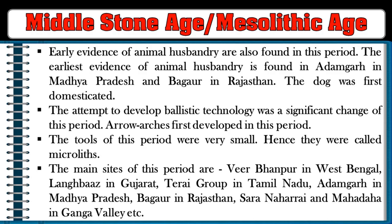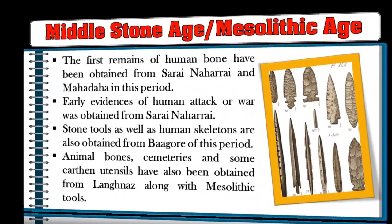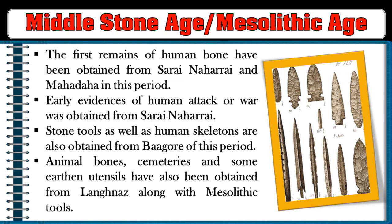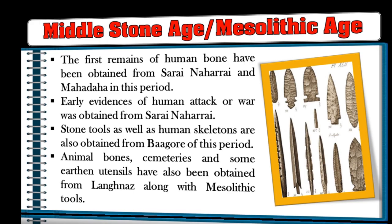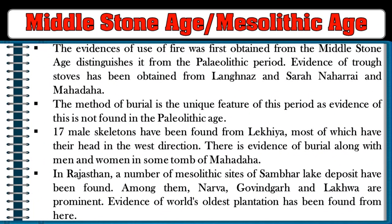Main Mesolithic sites include Birbhanpur in West Bengal, Langhnaj in Gujarat, Teri group in Tamil Nadu, Adamgarh in Madhya Pradesh, Bagor in Rajasthan, and Sarai Nahar Rai and Mahadaha in the Ganga Valley. The first remains of human bones have been obtained from Sarai Nahar Rai and Mahadaha. Early evidence of human warfare was obtained from Sarai Nahar Rai. The evidence of use of fire was first obtained from the Middle Stone Age.